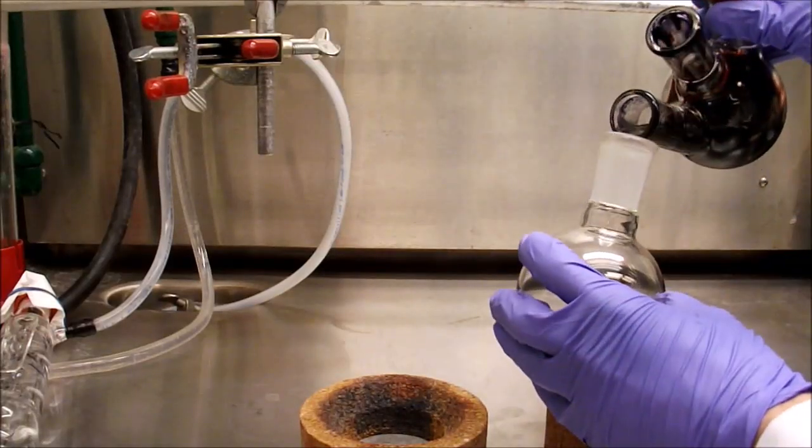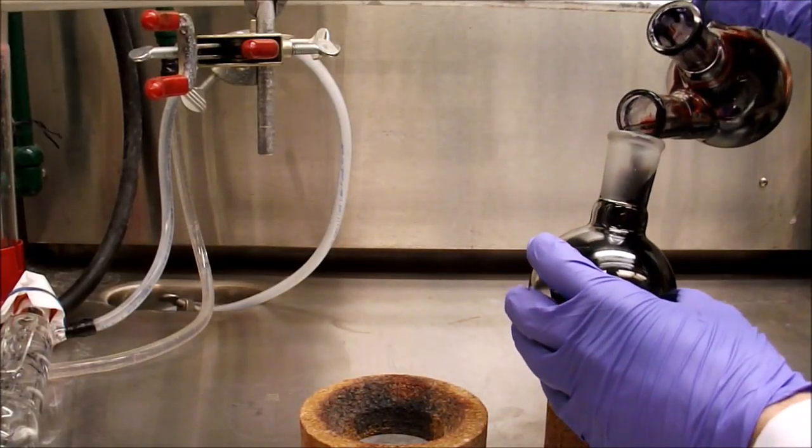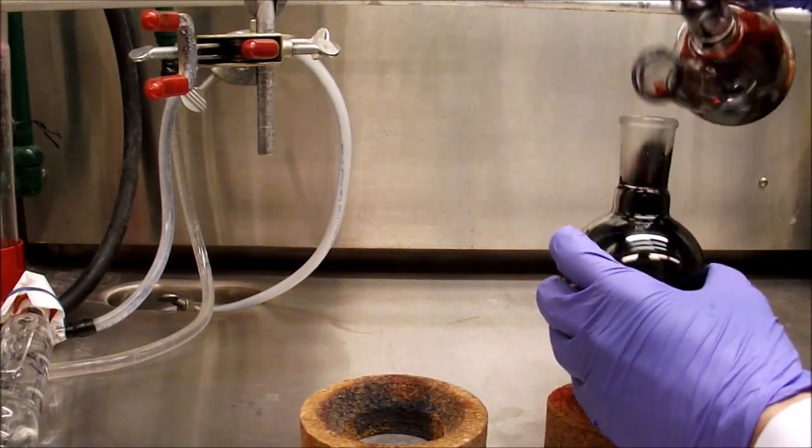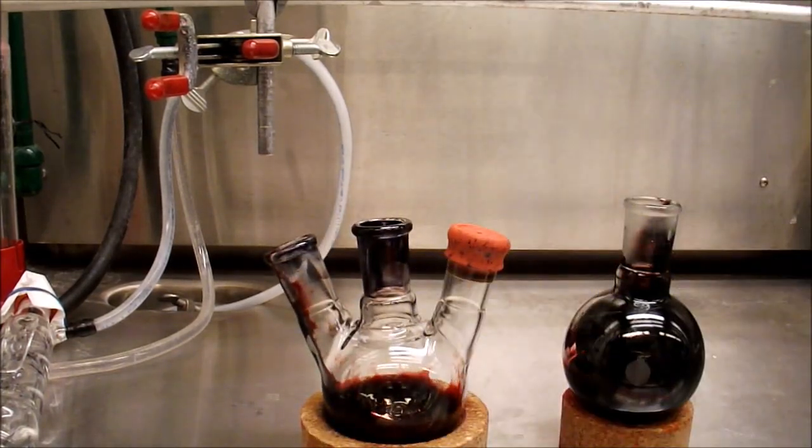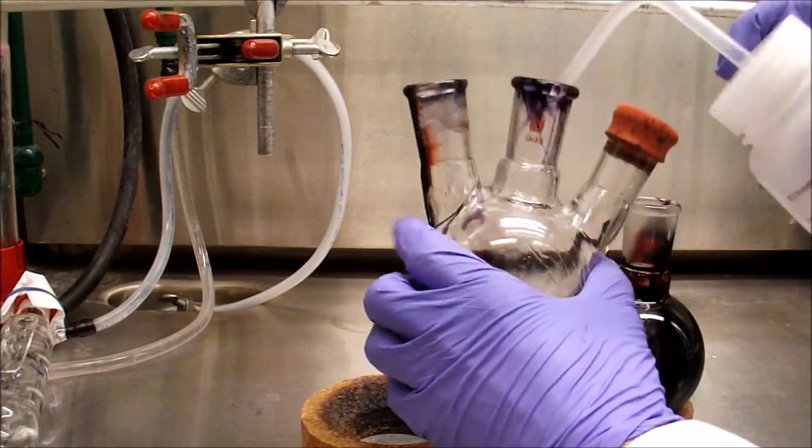The reaction is let to cool to room temperature. After the reaction is cooled, the mixture is transferred to a round bottom flask using a small amount of dichloromethane to transfer and the solvent is removed on a rotavap.